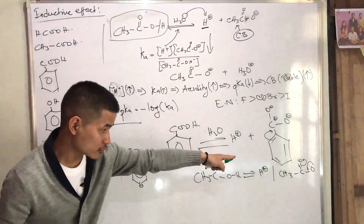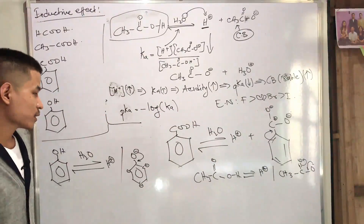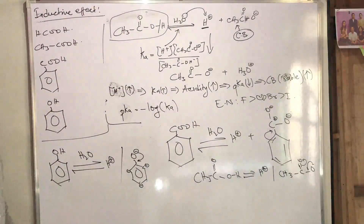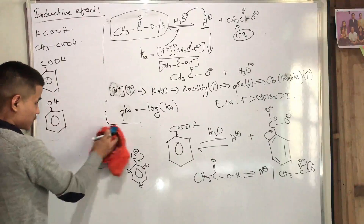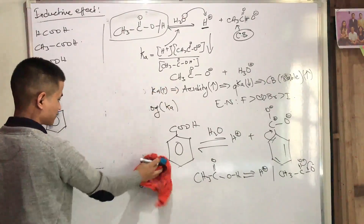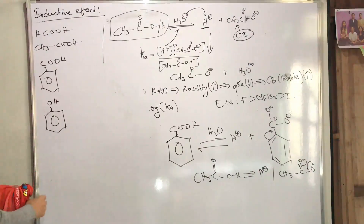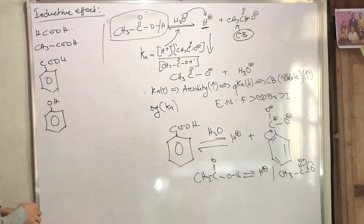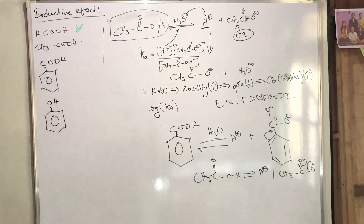So the conjugate base of phenol is more stable than carboxylic acid in terms of resonance — making it the same acid level. This is the same acid level comparison — the stability of the conjugate base determines the acidity.